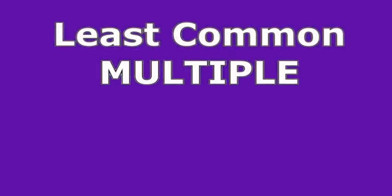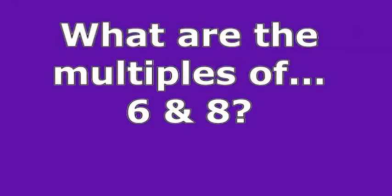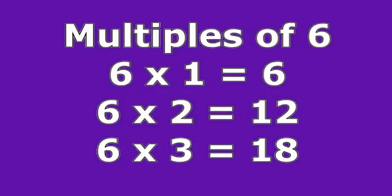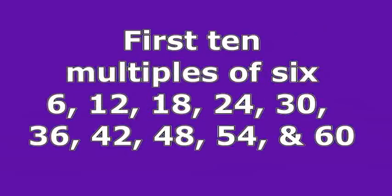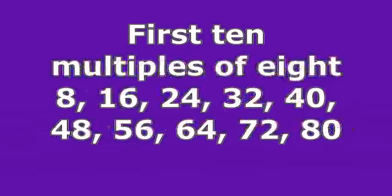Let's start learning about the LCM. To find the LCM, you must learn to write the multiples of the numbers. Let's start by finding the multiples of 6 and 8. The multiples of 6 start off with 6, 12, and 18. By continuing to add 6 to the next multiple of 6, you get the first 10 multiples. To get the first 10 multiples of 8, you get the following list: 8, 16, 24, all the way to 72 and 80.